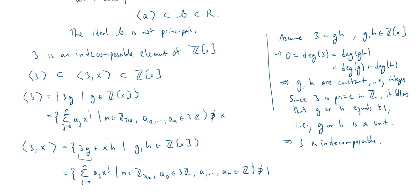So we're now in a situation, we have an ideal that we want to say something about. It properly contains an ideal generated by an indecomposable element, and it is also properly contained in the entire ring. So by the lemma, by our lemma, the ideal generated by 3 and x is not principal. And there we go.